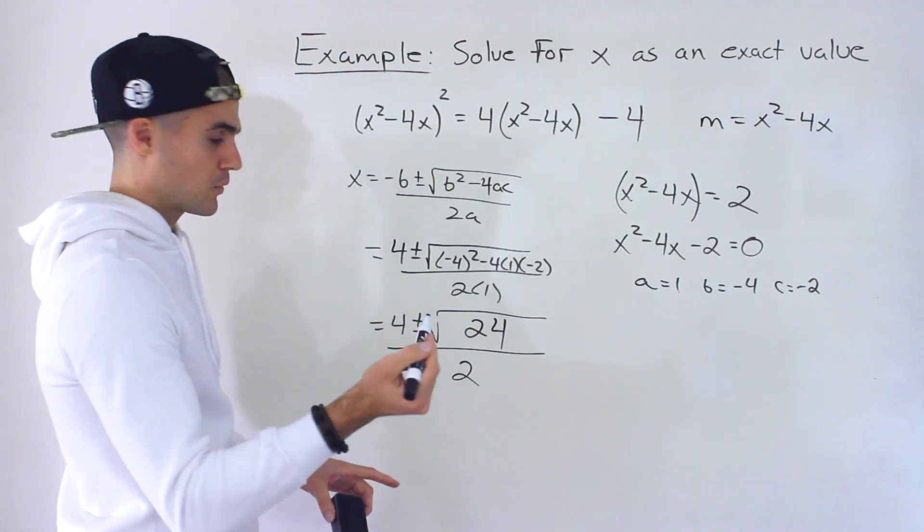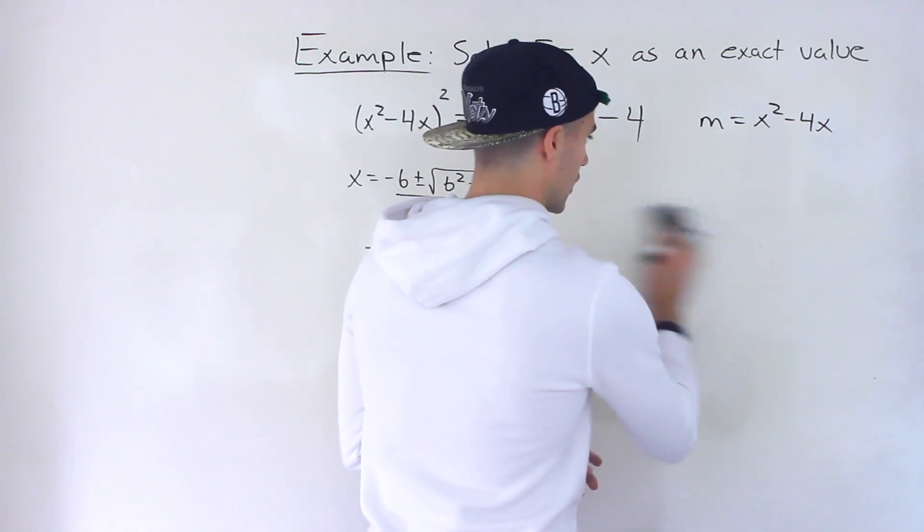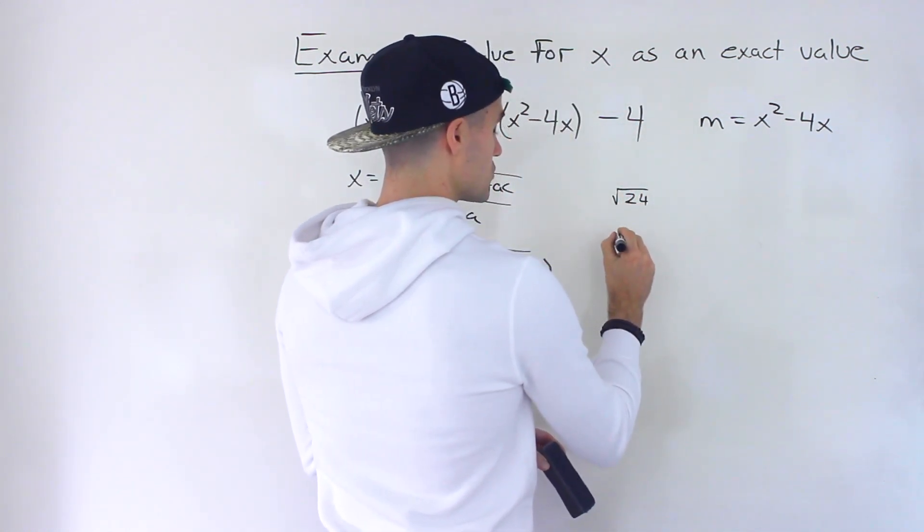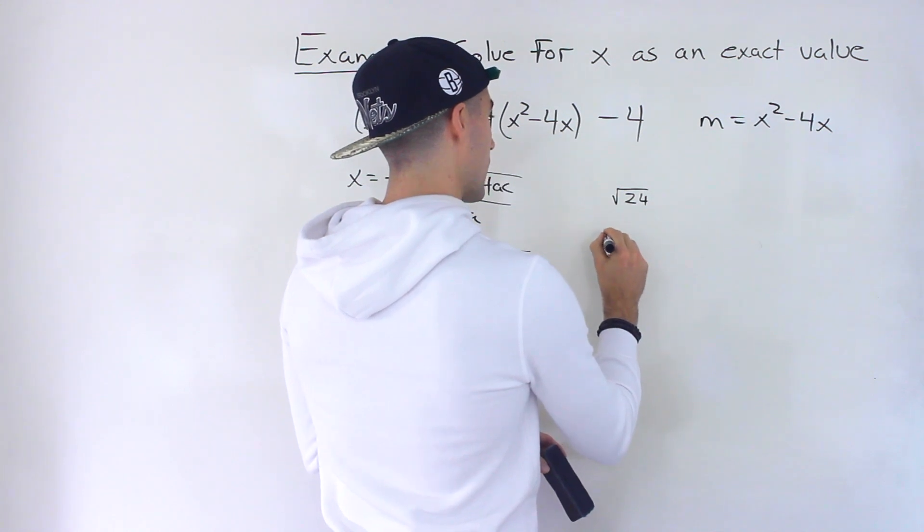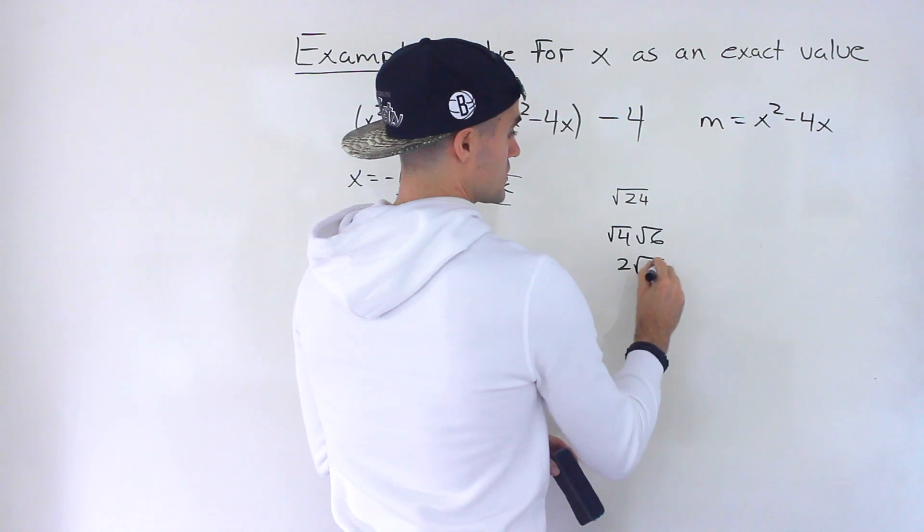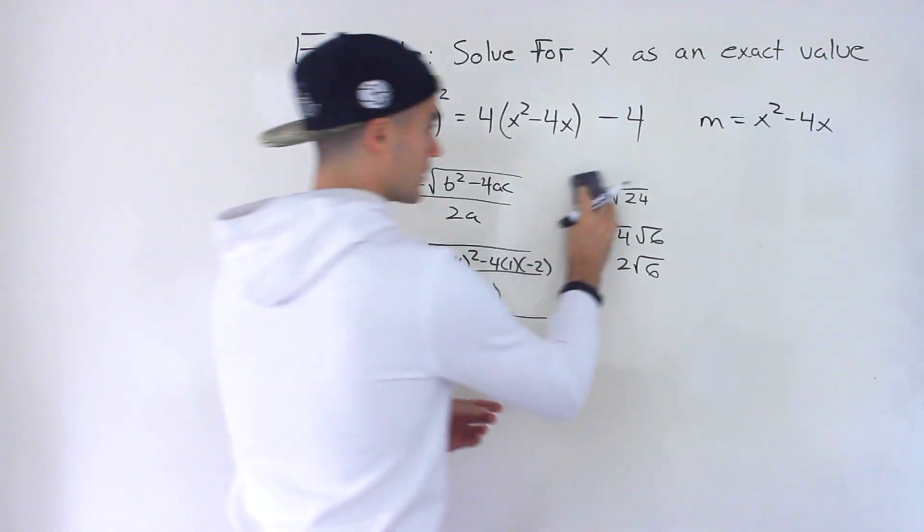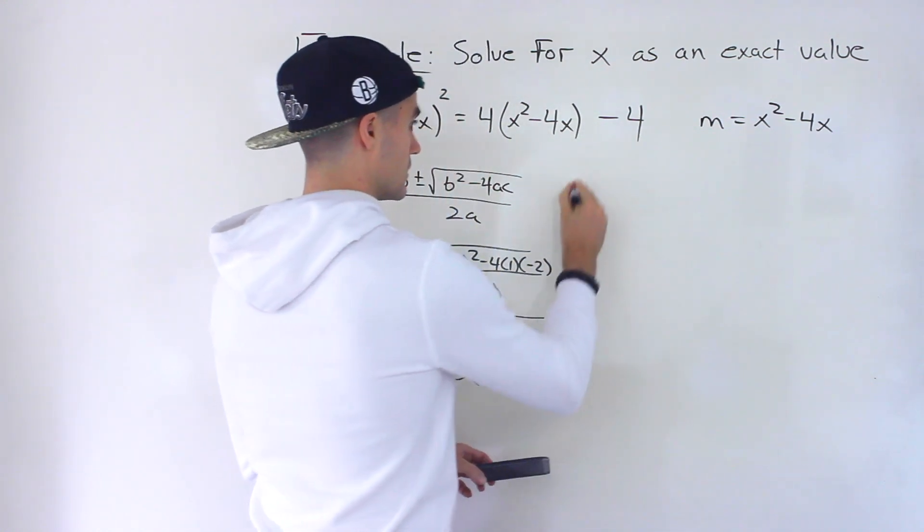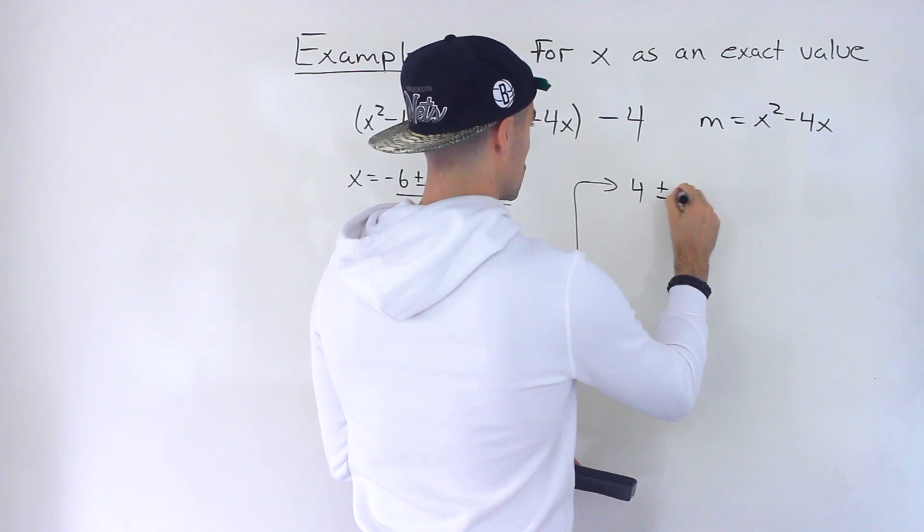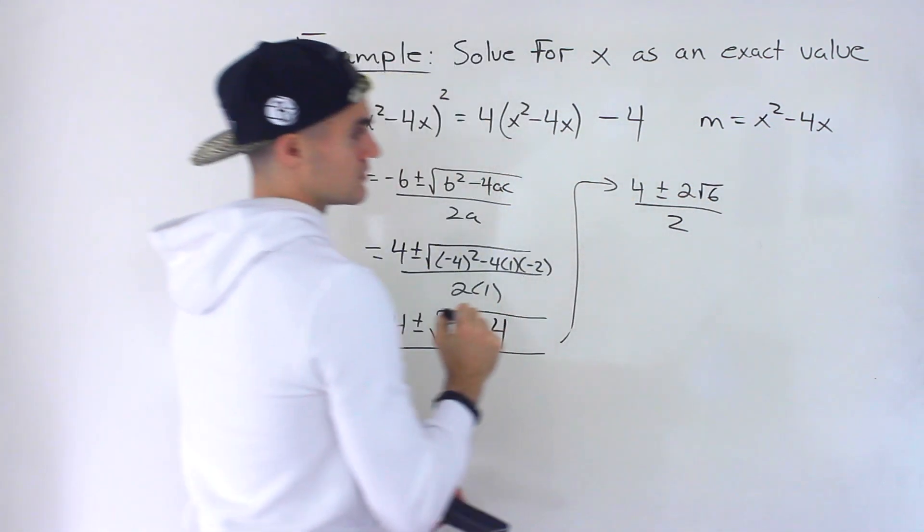Right and now you can see how we're going to get that exact value. This actually simplifies, the root 24 that simplifies to root 4 times root 6 which would be 2 root 6. Root 24, 2 root 6 those are the exact same thing. So we can rewrite this as 4 plus or minus 2 root 6 all over 2.